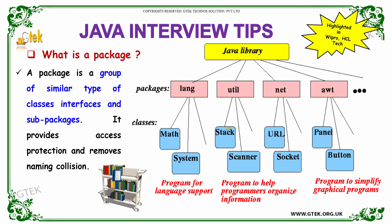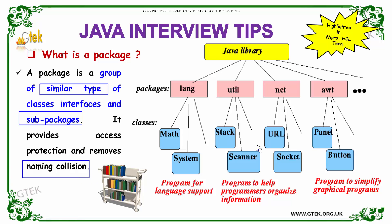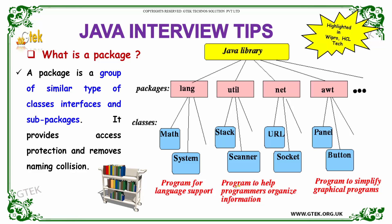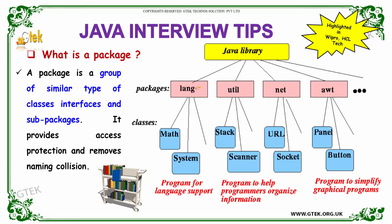A package is a group of similar types of classes, interfaces, and sub-packages which are grouped together. It provides access protection and removes name collision. Java library packages include lang, util, net, and awt. The lang package consists of sub-packages that form language support, util helps programmers organize information, and awt simplifies graphical programs.